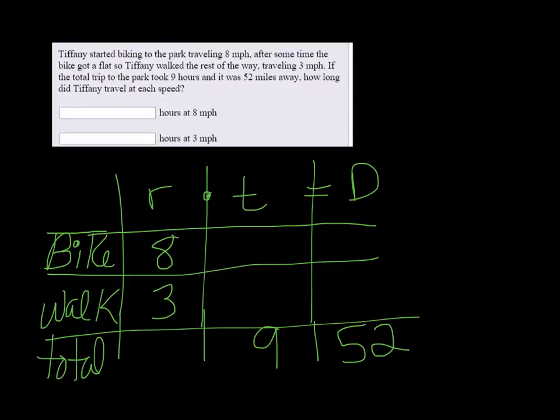We don't know how long she biked so we're just going to call that T. However many hours that was, we can subtract it from the total amount of hours, nine, so nine minus T would be how long she walked. For instance if she biked for four hours then she must have walked for five, so you just subtract whatever that number is from nine. But we don't know what it is so we're just going to call it T.